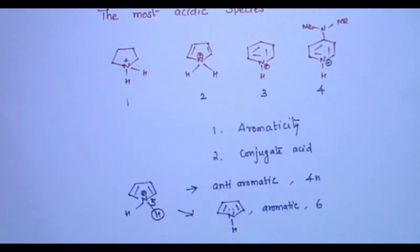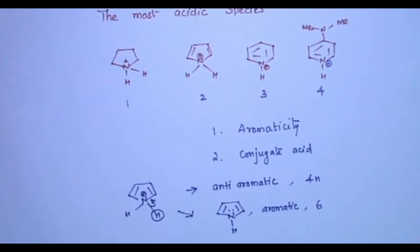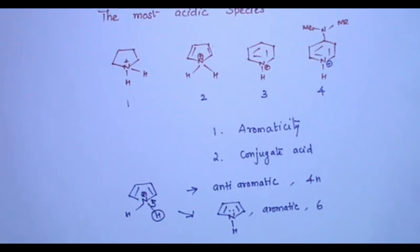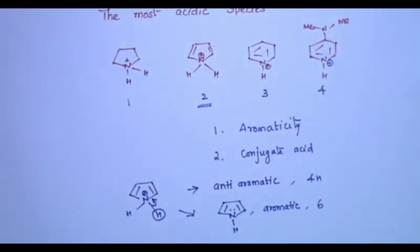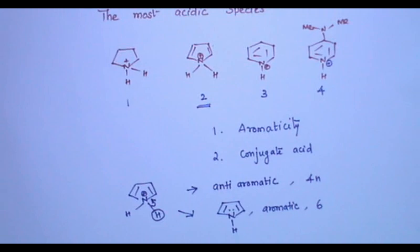What about the first compound? This is pyridine — there is no aromatic property at all. Since there is no pi bond and no conjugation, there is no aromatic character. So the answer is compound two. An anti-aromatic compound becomes aromatic after losing its proton.